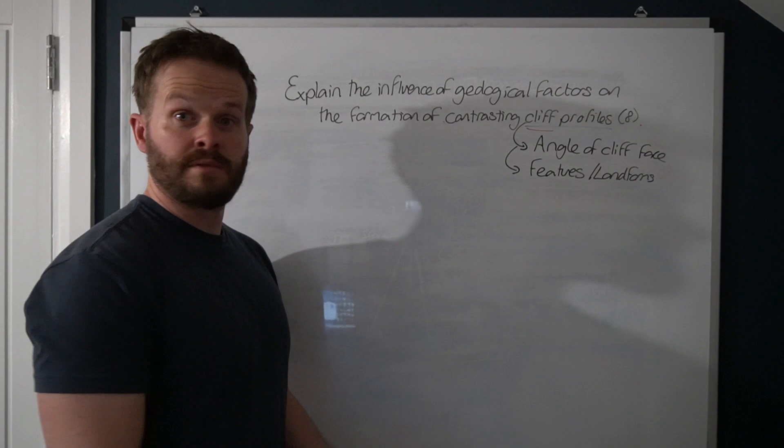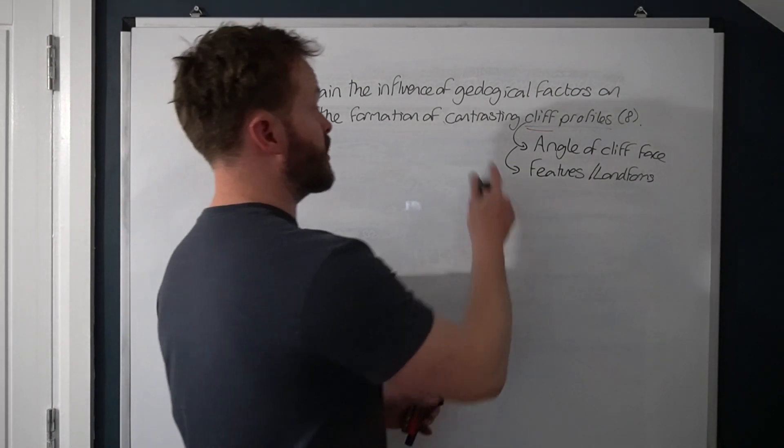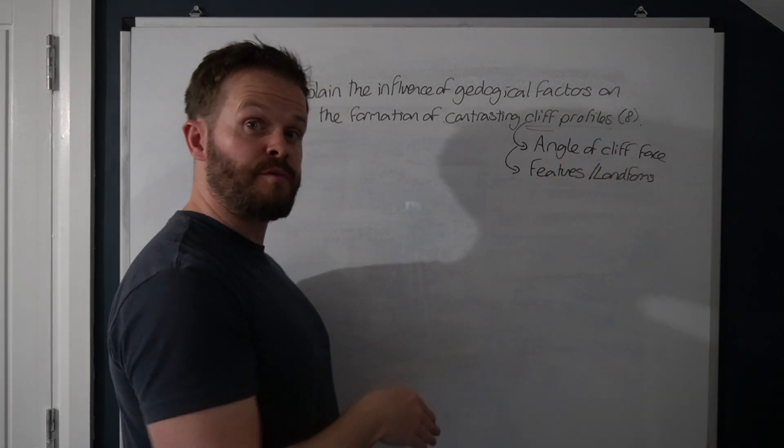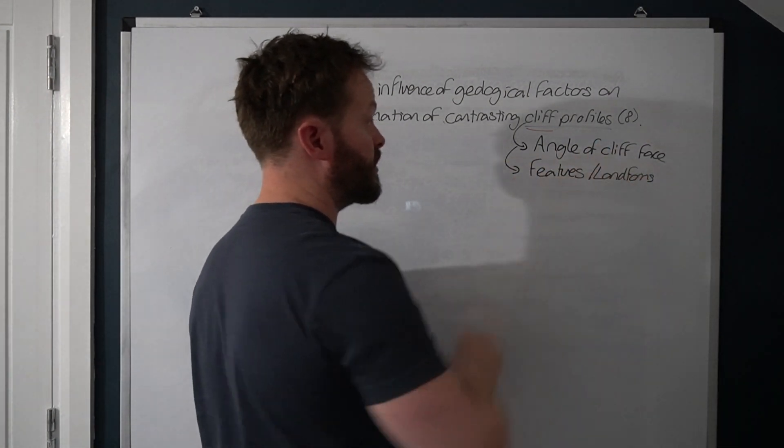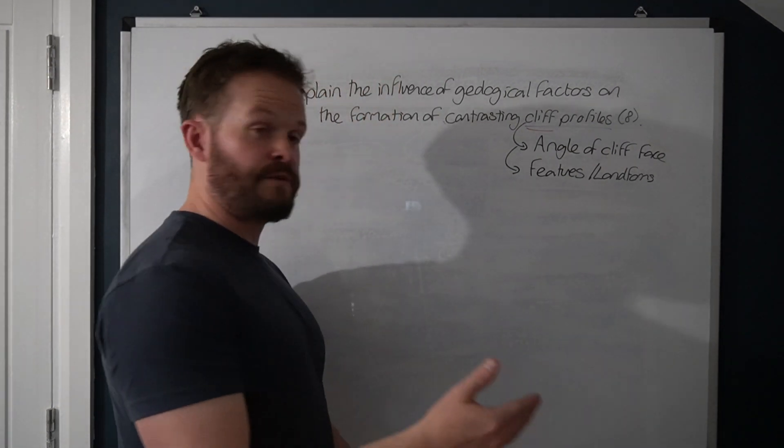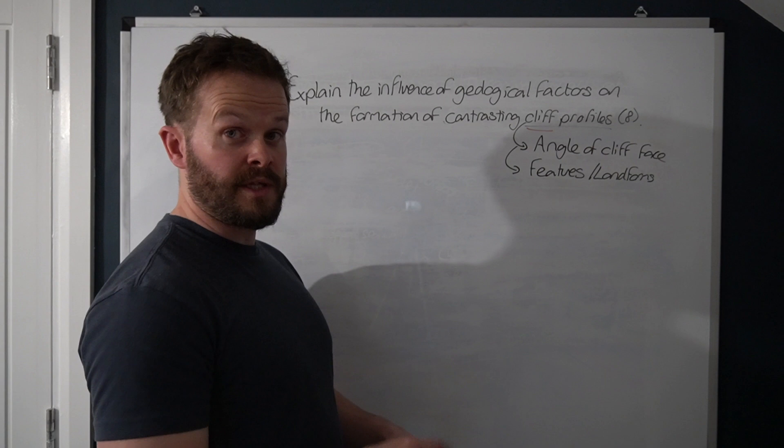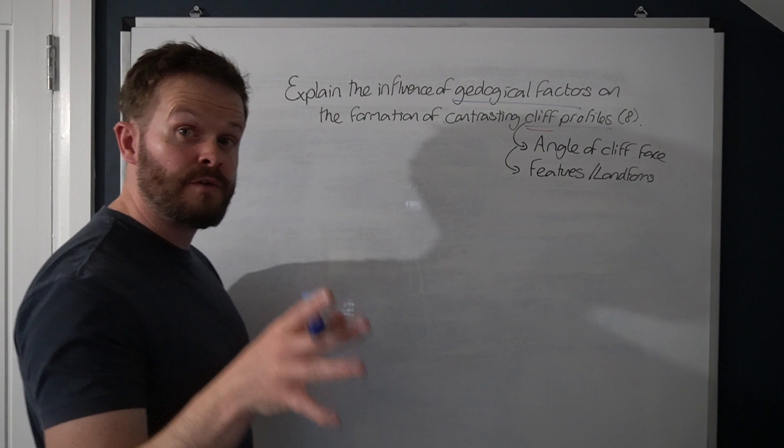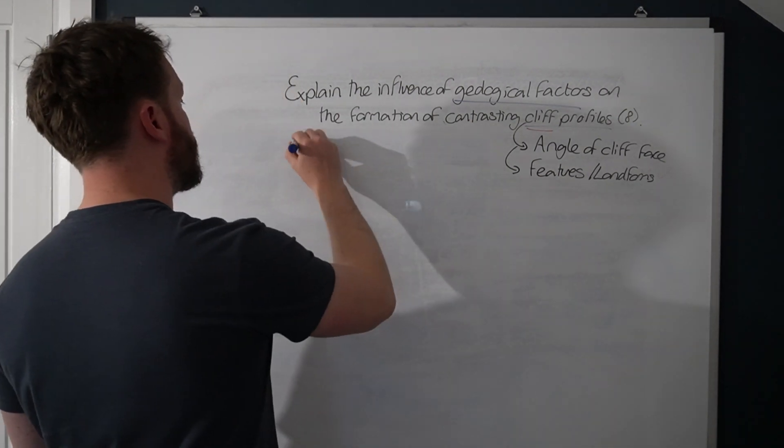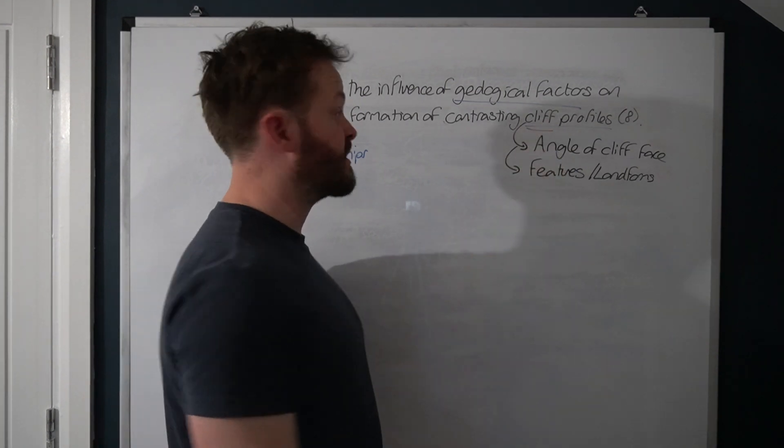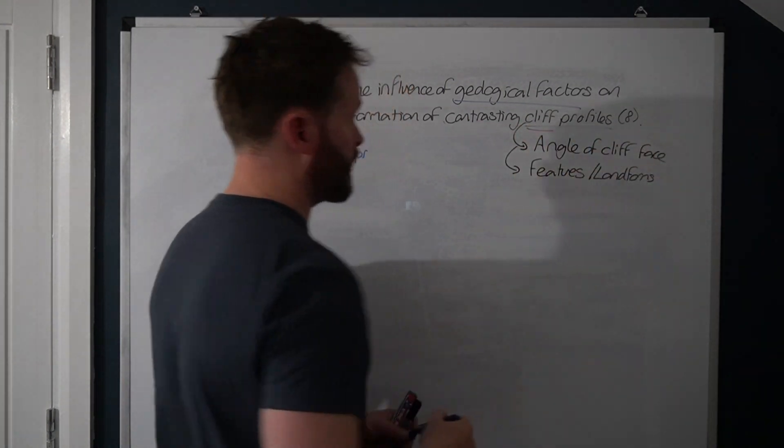Second thing we talk about, features and landforms. That's it. So all you're doing when you're talking about contrasting cliff profiles is talking about are there different cliff profiles with different angles of cliff face and are there any distinguishing features or landforms? What we're doing in this question is obviously relating it to geological factors. What the examiner is looking for you to do is establish relationships. What's the relationship between geological factors and your cliff profile?